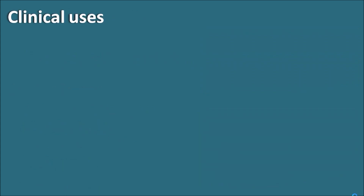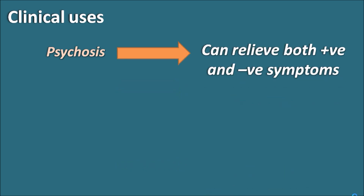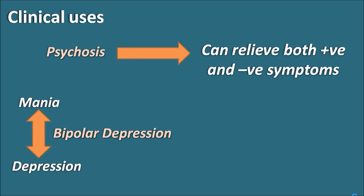One important clinical use of aripiprazole is in the treatment of psychosis. Aripiprazole can relieve both positive and negative symptoms, which is why it is widely preferred in the treatment of psychosis. A second important clinical use is in bipolar depression, where the mood of the patient swings from mania to depression. Aripiprazole is effective in the treatment of bipolar depression.